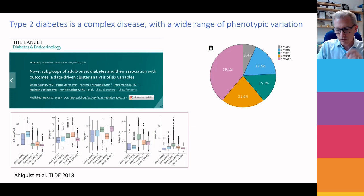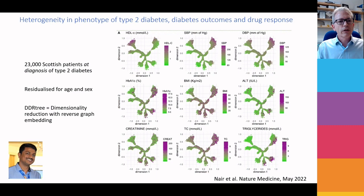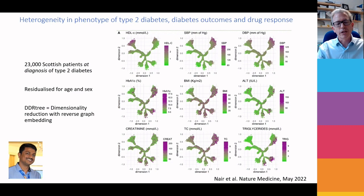What we've done, using data available to us in Scotland, is we've looked at the Tayside and Fife population of people with diabetes — 23,000 people at diagnosis. We look at simple clinical measures: blood pressure, HbA1c, BMI, ALT, triglycerides. We then apply a nonlinear dimensionality reduction approach — essentially a nonlinear principal components analysis — and you end up with this tree structure where every dot is a person.